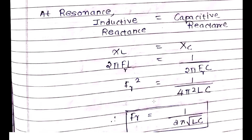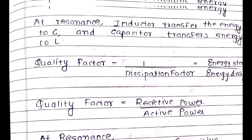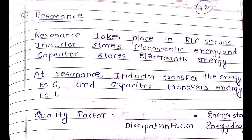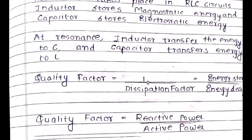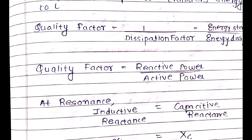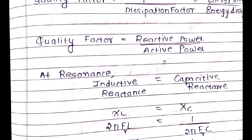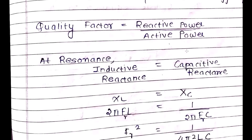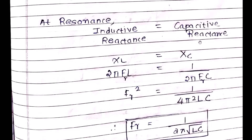To recap: resonance takes place in an RLC circuit; the inductor and capacitor have their own energy storage, and at resonance the transfer of energy takes place. The quality factor equals 1 divided by the dissipation factor, which equals energy stored upon energy dissipated, and also equals reactive power upon active power. At resonance, XL = XC, giving fr = 1/(2π√LC). This is a very important derivation — please make a note of it.